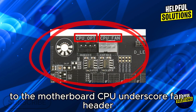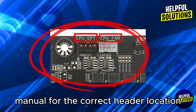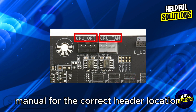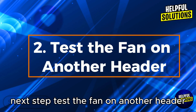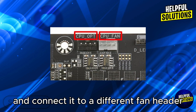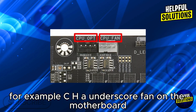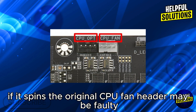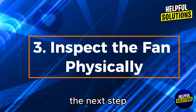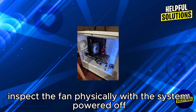If uncertain, consult your motherboard's manual for the correct header location. Next, test the fan on another header — disconnect the CPU fan and connect it to a different fan header, for example CHA_FAN on the motherboard.